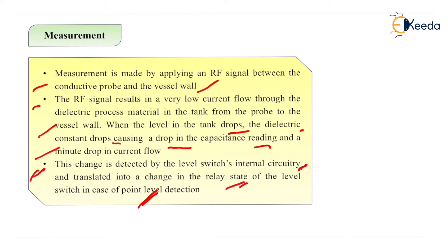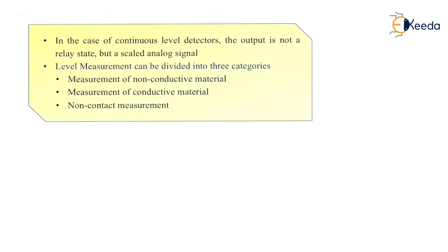To summarize: the RF signal causes a low current flow through the dielectric process material from probe to vessel wall. When the liquid level drops, the dielectric constant drops, causing a drop in capacitance reading, which is detected by the level switch internal circuitry and translated into a change in relay state for point level detection. For continuous level detectors, the output is not a relay state but a scaled analog signal. This level measurement is divided into three categories: measurement of conductive material, measurement of non-conductive material, and non-contact measurement.